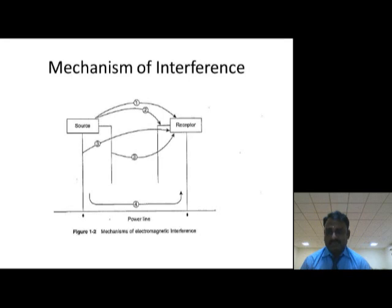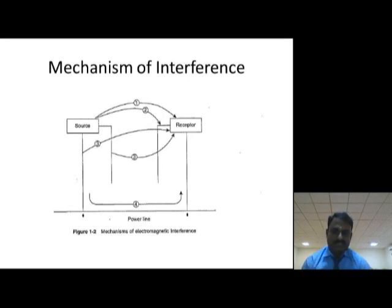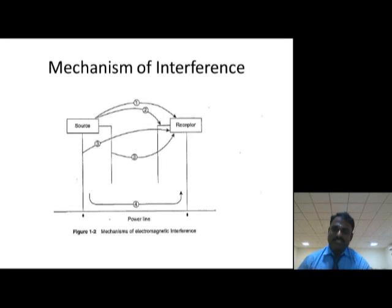Path two is called conducted emission. Path three represents radiation from the cable of the source to the receptor — a kind of radiated interference. Path four represents interference from cable to cable — conducted interference. This mechanism shows that whatever the interference, it will take different paths to travel from source to receptor. In conclusion, it comes down to radiated emission and conducted emission, regardless of the source and receptor involved. These are the basic mechanisms of interference.